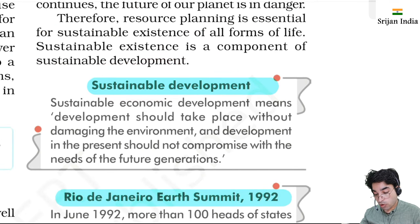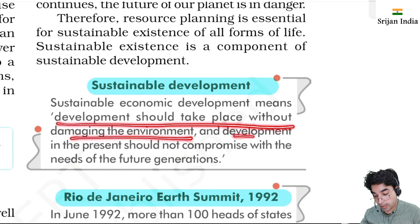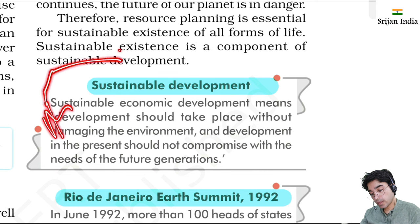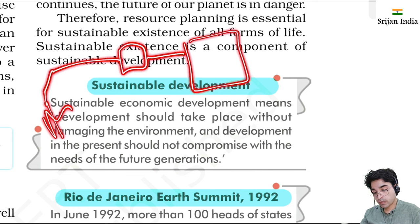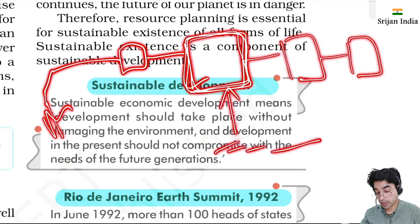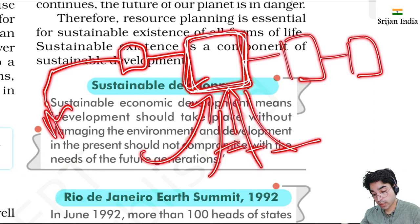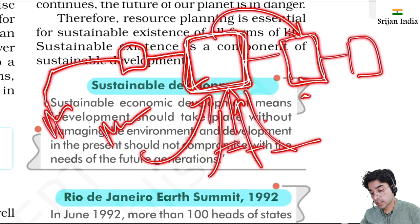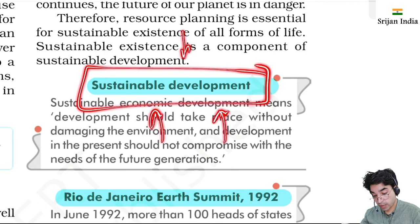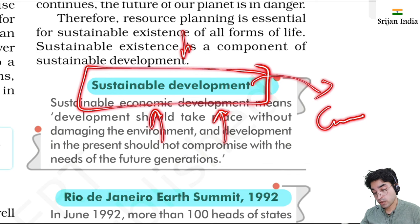Sustainable development means economic development should take place without damaging the environment, and development in the present should not compromise the needs of future generations. The present generation is so greedy it is destabilizing all resources and destroying them, so future generations will find nothing. Sustainable development happens when the present generation fulfills its own needs but does not compromise the life of future generations.